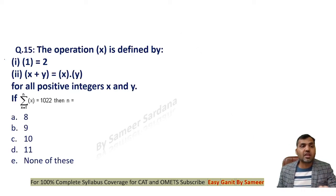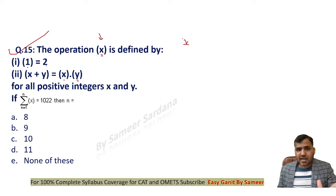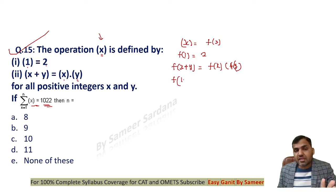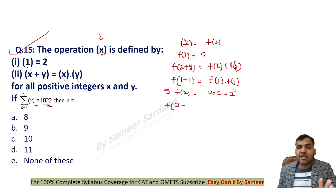Question number 15: the operation ⌊x⌋ is defined as ⌊1⌋ = 2 and ⌊x + y⌋ = ⌊x⌋·⌊y⌋. This is essentially a function: f(1) = 2 and f(x + y) = f(x)·f(y). We need to find for what value of n a certain sum equals 1022. If x = 1, y = 1: f(2) = f(1)·f(1) = 2·2 = 2². Then f(3) = f(2)·f(1) = 2²·2 = 2³.